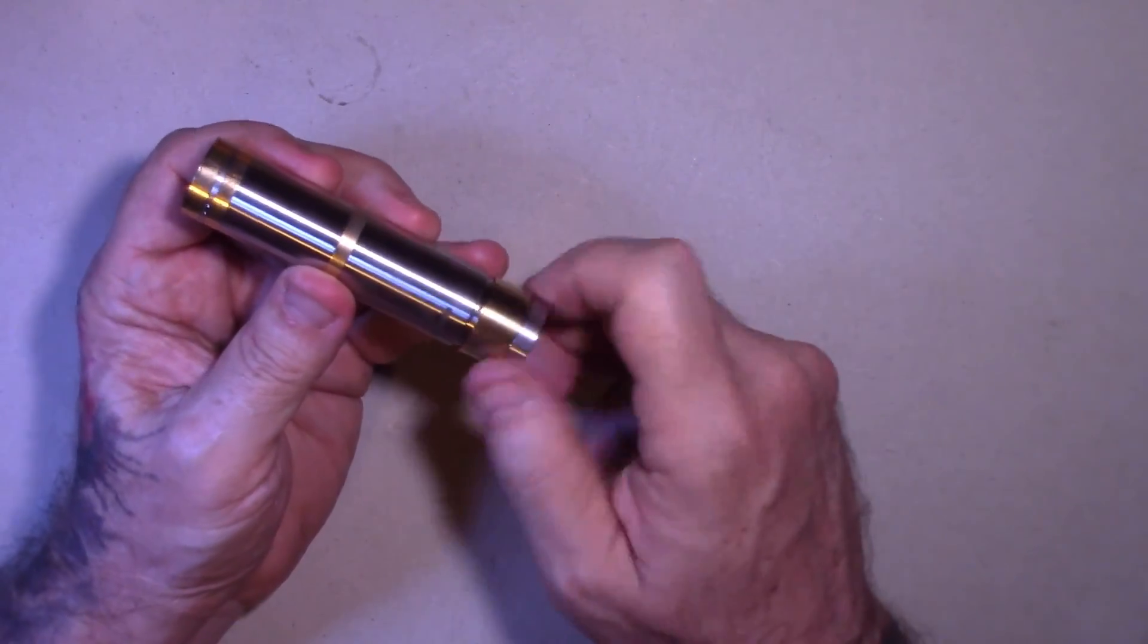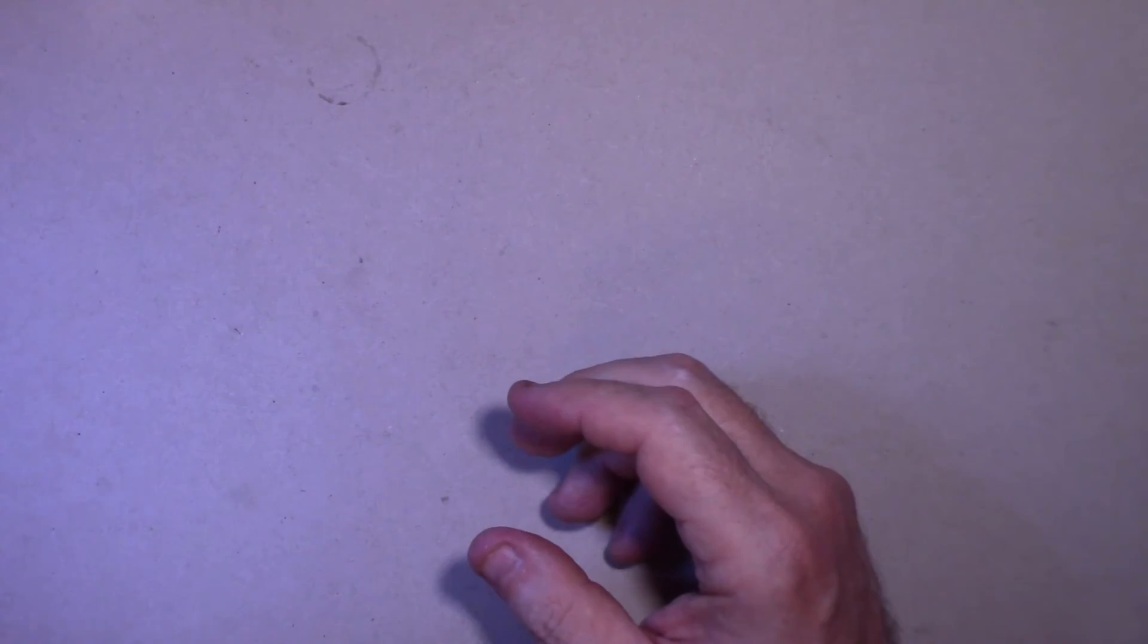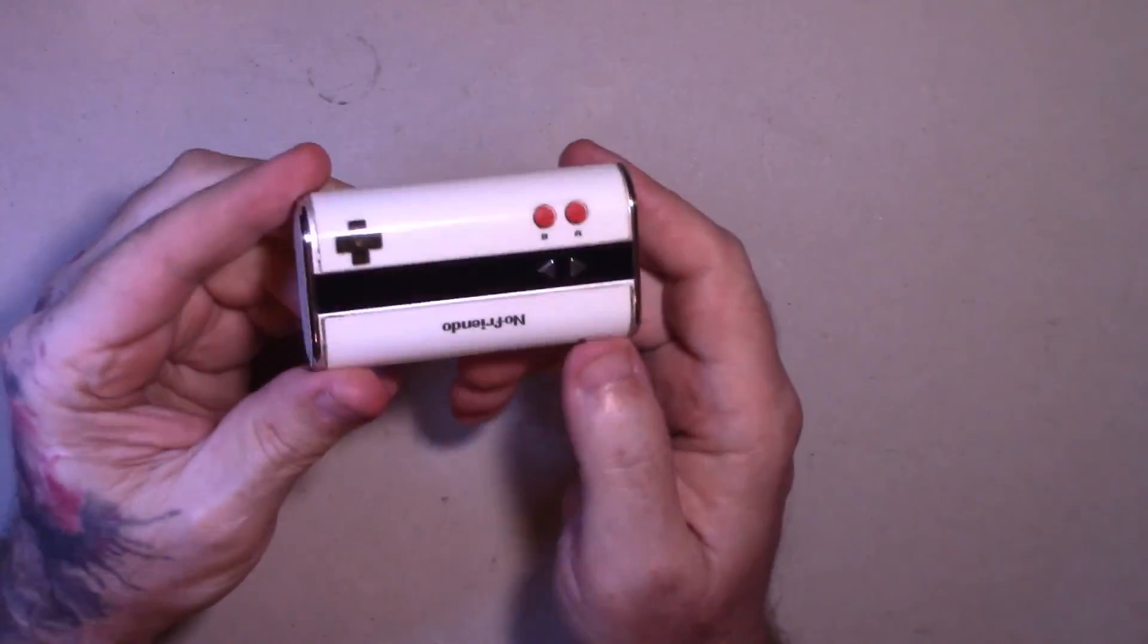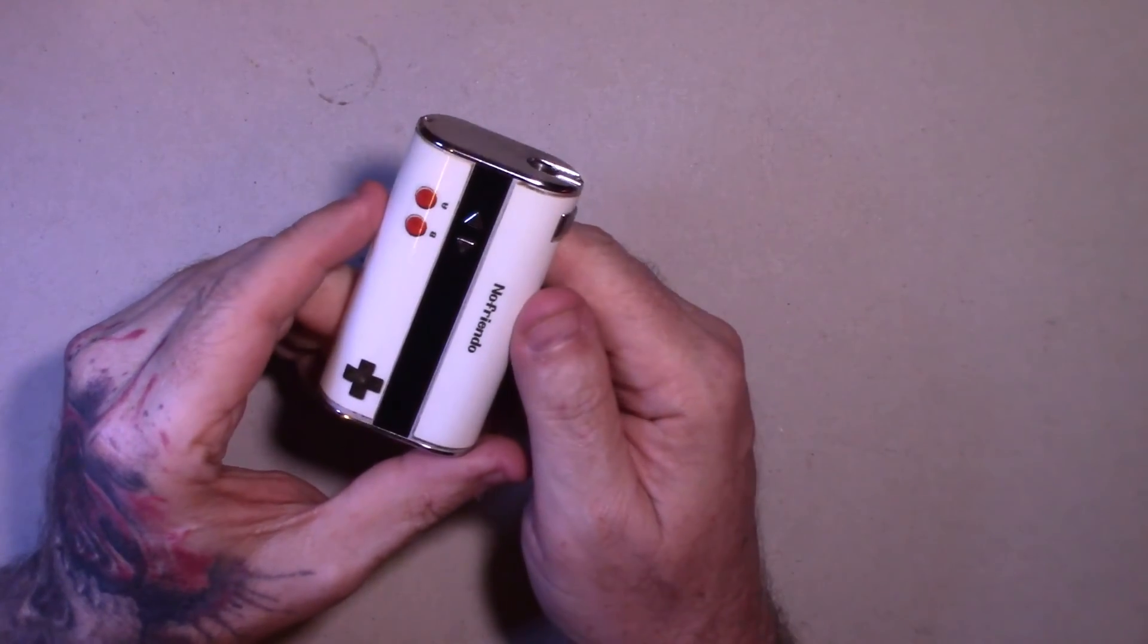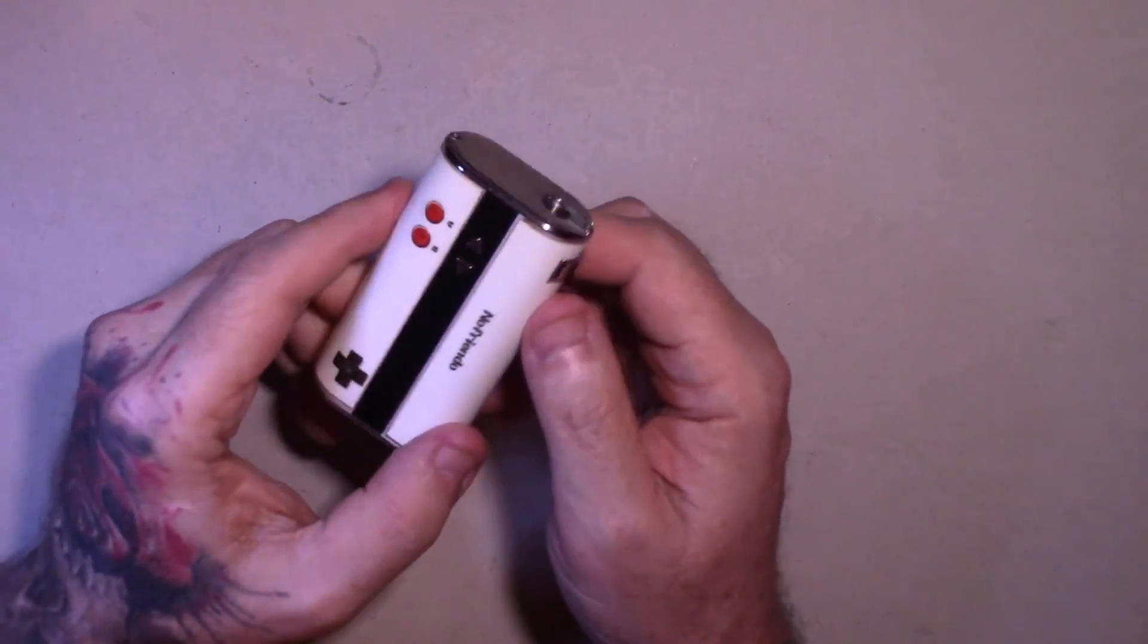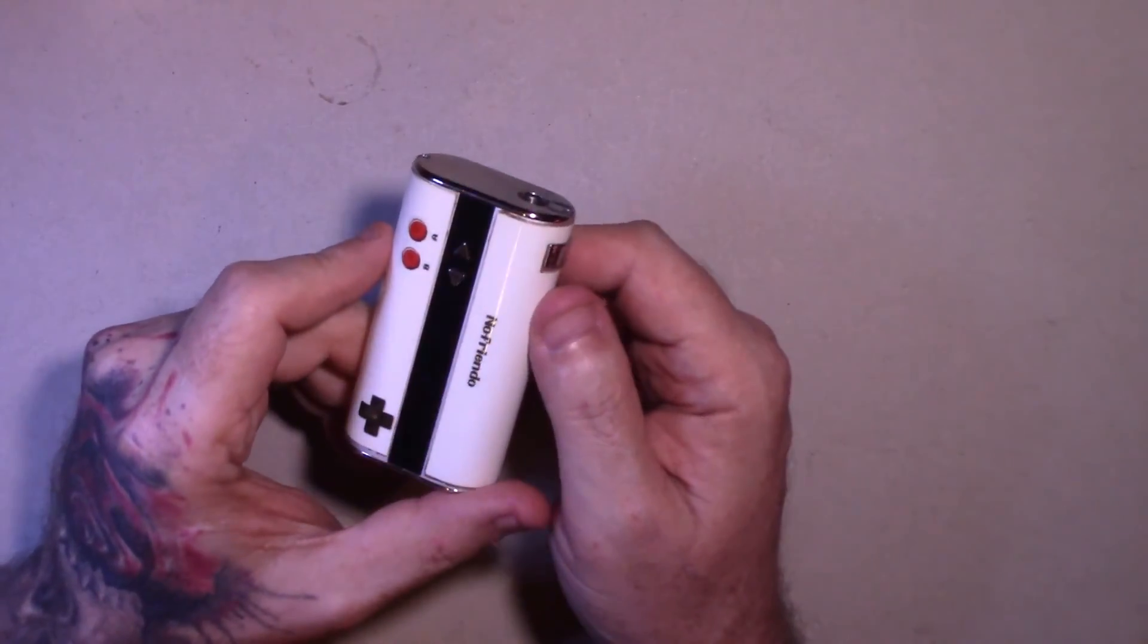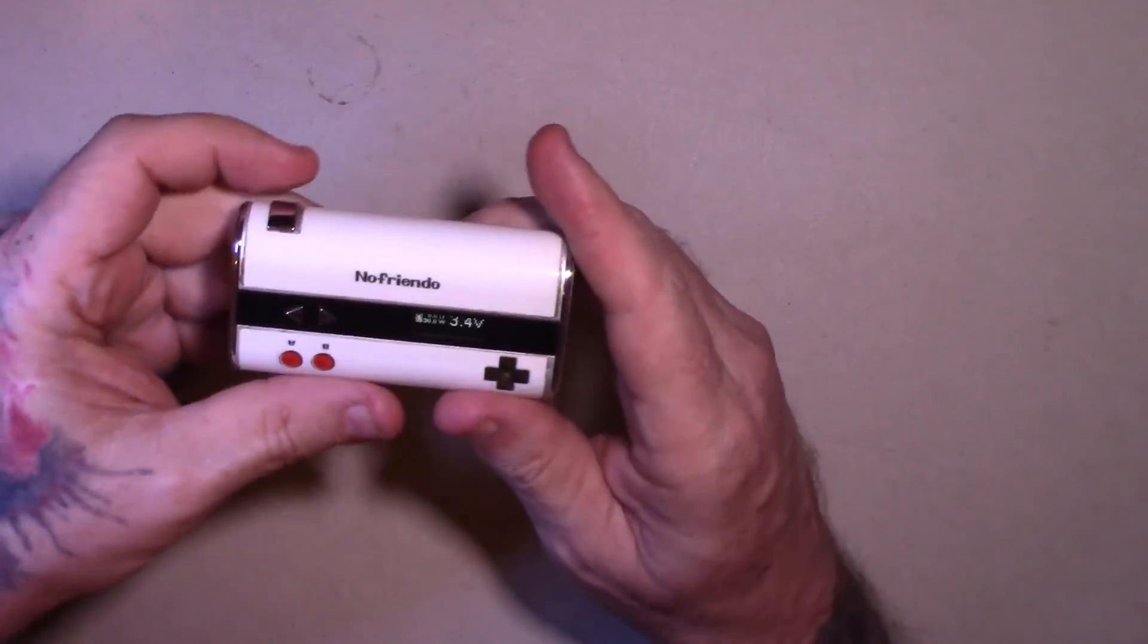So, since this is a beginners video, stay away from anything that says unregulated. On your regulated mods, you say, well, there is a volt setting and a wattage setting. What is the difference? What is the deal with that?